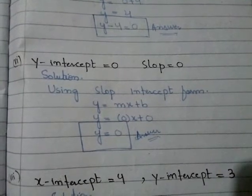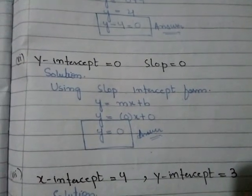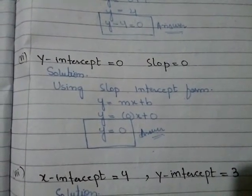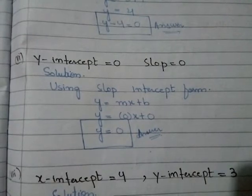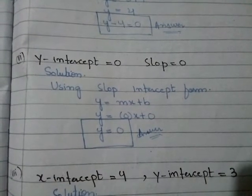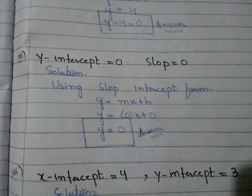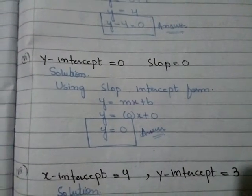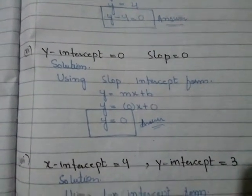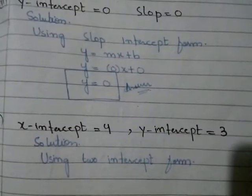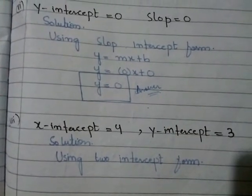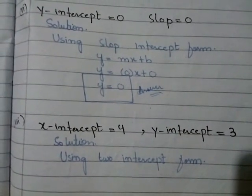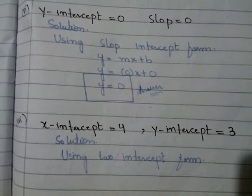Question number 6: y-intercept is equal to 0 and slope is equal to 0. Solution: using slope-intercept form, y = 0x + 0. Therefore y = 0.